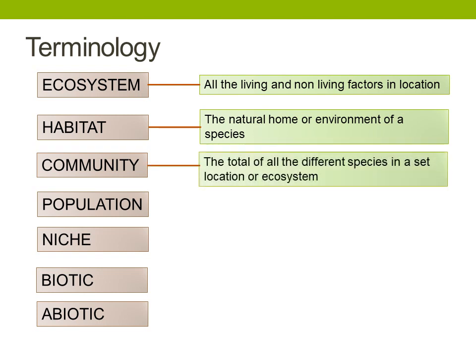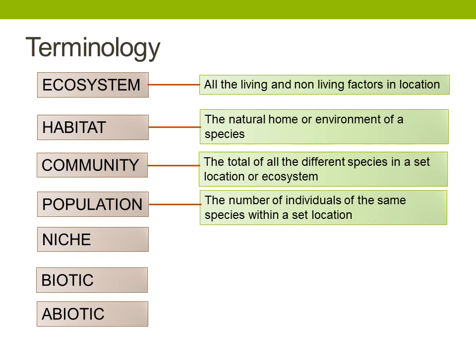Community is the total of all the living species in a set location or an ecosystem. So we're looking at all the living things there — that would include all the plants and all the animals, any fungi or bacteria that might be there, and the protoctists. Population is the number of individuals of the same species within a set location. Within that defined area we would want to know how many individuals of that species can be found.